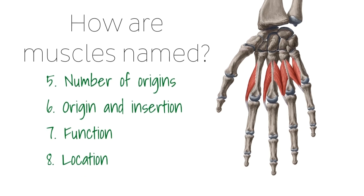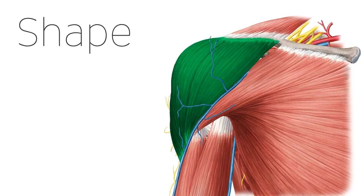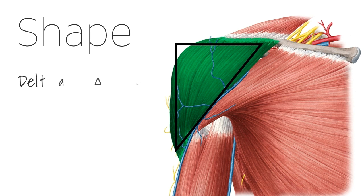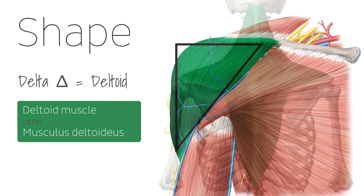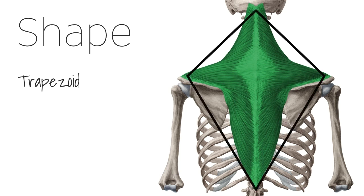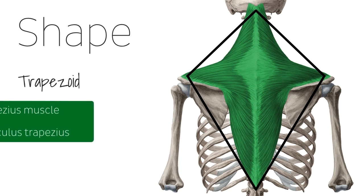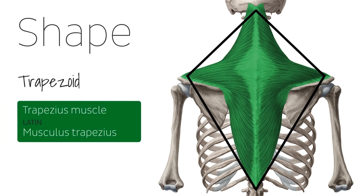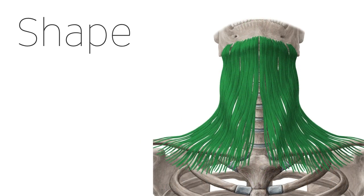The name of a muscle can be derived from its shape. For example, the term deltoid, which basically means triangular in shape or shaped like the Greek letter delta, can be used to name a muscle. A prime example of this is the deltoid muscle. Also the term trapezius is used, which basically describes the trapezoid or diamond shape of a muscle. A good example of this is the trapezius muscle, which as you can see has a trapezoid shape.